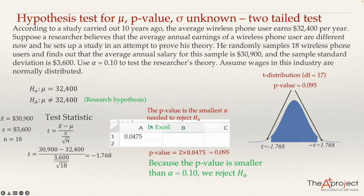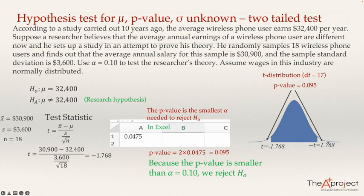That concludes this problem. In summary, when using the p-value approach: compute the t-test statistic, then find the p-value — which is the smallest alpha needed to reject the null. For a one-tail test, use the area to the right or left of the t-value. For a two-tail test, multiply that area by 2.